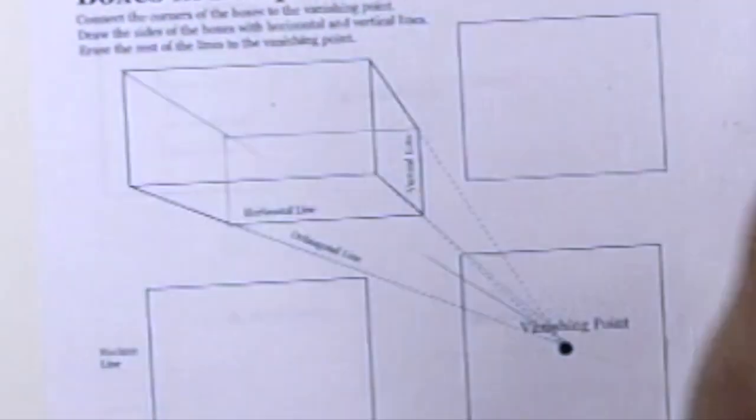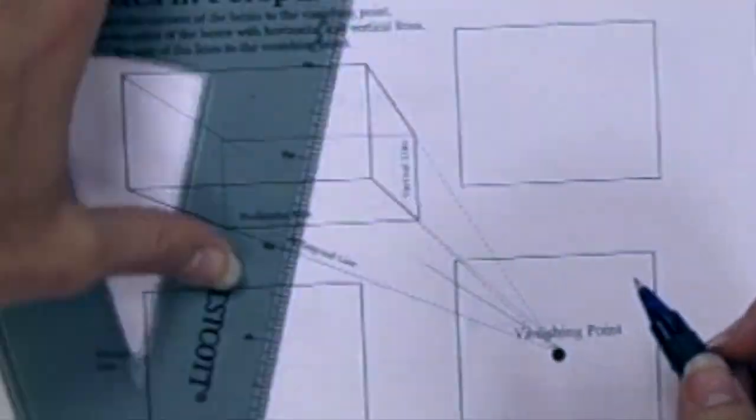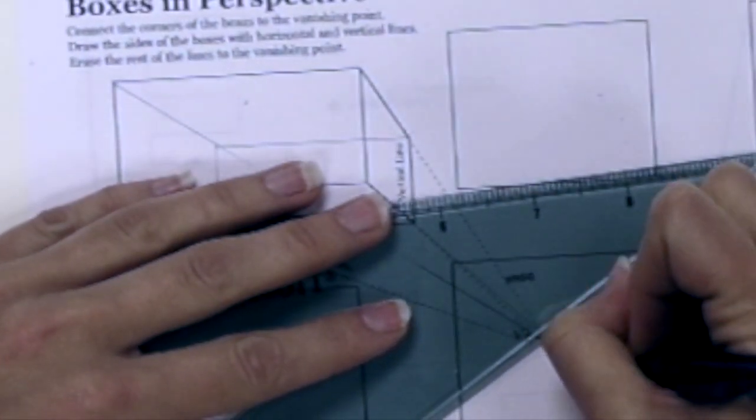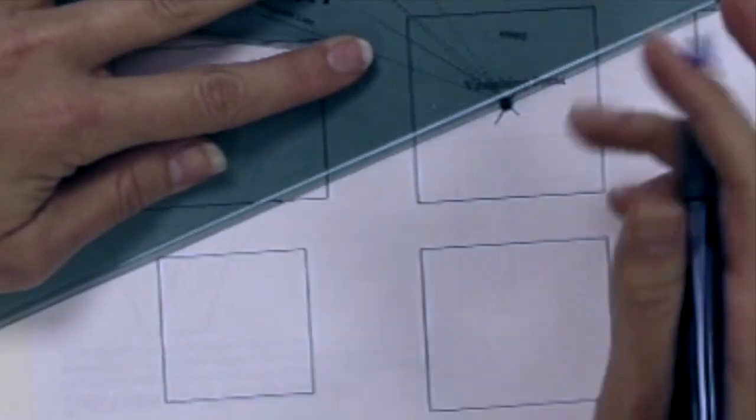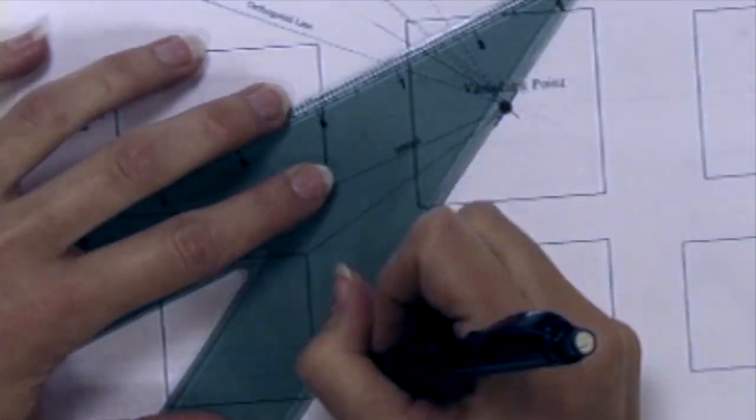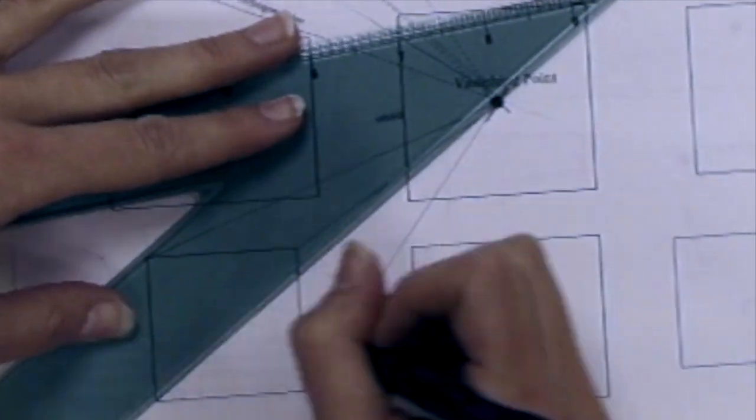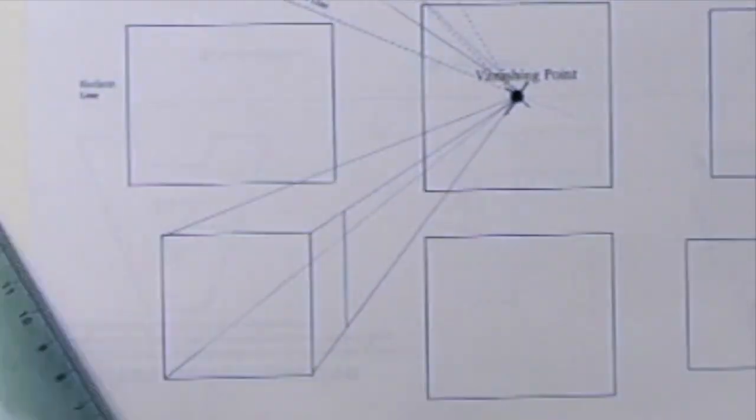There I am erasing the lines that aren't needed to illustrate the box. The vanishing point is quite large. You want to have a much more precise point to connect all of your orthogonal lines to. So I'm making every effort to have these lines intersect at the same exact point, not that big snowball.